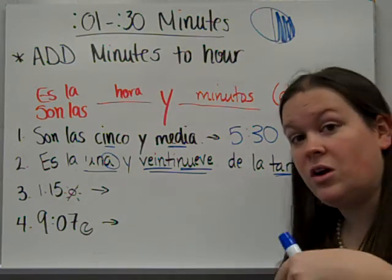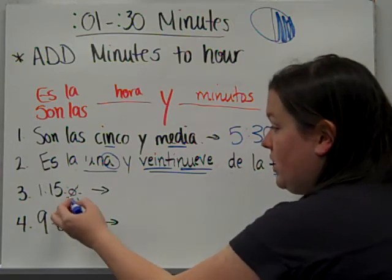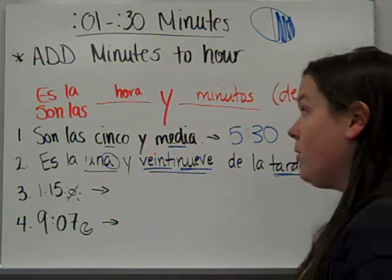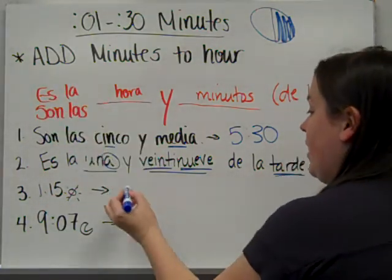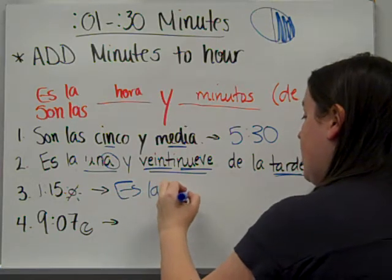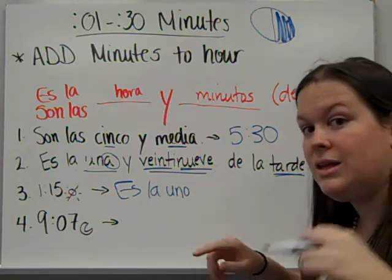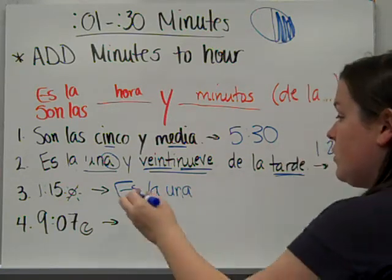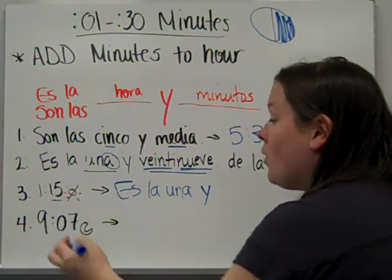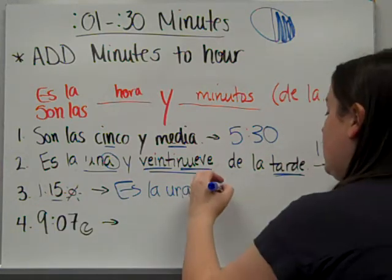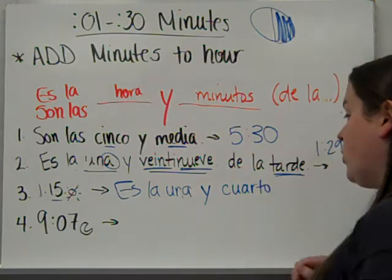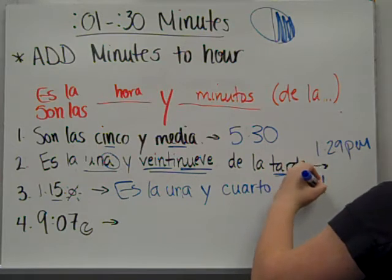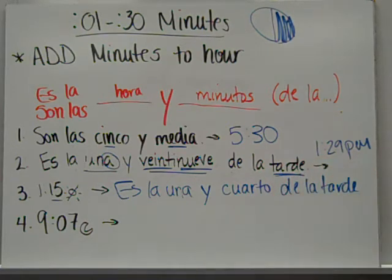And then we've got two here starting in English. Going to Spanish. One fifteen. And then this is the afternoon sign. So one. Since it's not more than one hour, we're going to start with es la. Remember. Uno in time only changes to una. Feminine. So and. Because we have a little more time. It's a quarter past. So una y cuarto. Quarter. And then in the afternoon. De la tarde.